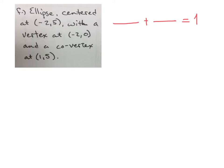Now, this graph is centered at negative 2, 5. So negative 2, 1, 2, 3, 4, 5. That's where the center is. That means in our equation, it's going to be x plus 2 squared and y minus 5 squared.